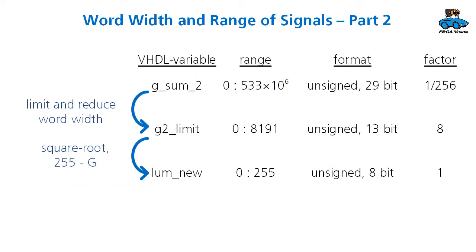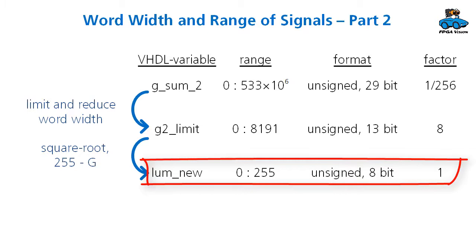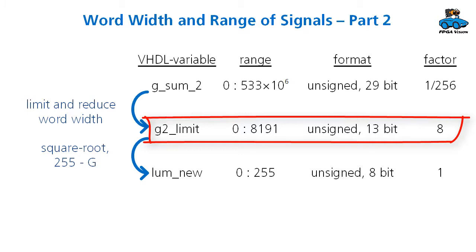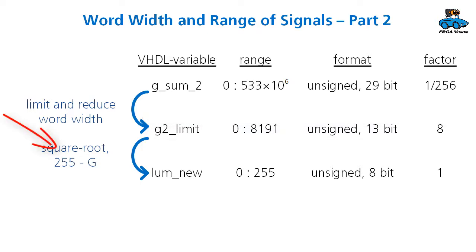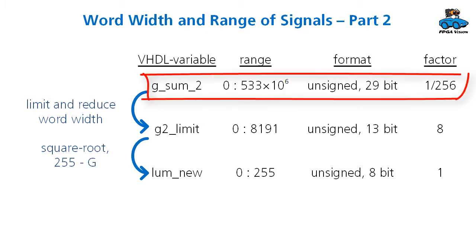So now we can have a second table of word widths and range of signals. Output of the square root is 8-bit in a range of 0 to 255. Input to the square root shall be a value of 13-bit, so that we have a range of 0 to 8191. And this means that we interchange the order of square root and limiting. In our first architecture, we first had the square root and then the limit. To use all the 13-bit, it's more advisable to first make a limit of the range we have, and then take the square root, so that we can use the full 13-bit range of the memory, which means we have here the output of our previous table, which was in the range of 500 million. And we limit it and reduce the word width to have an input value for the square root.